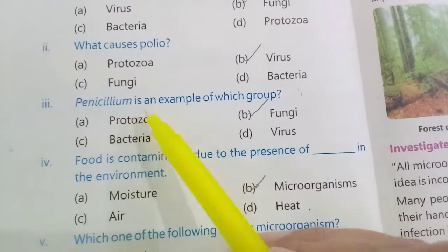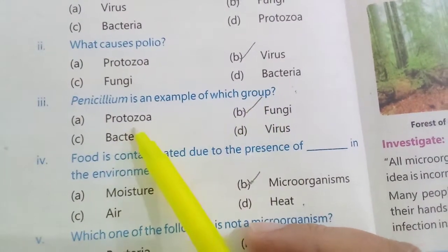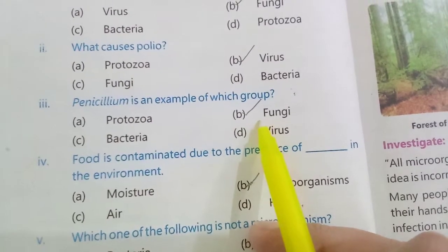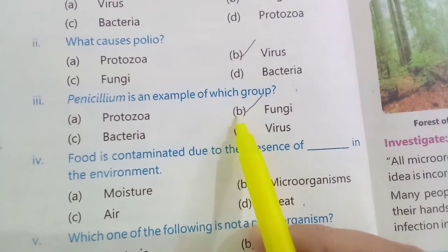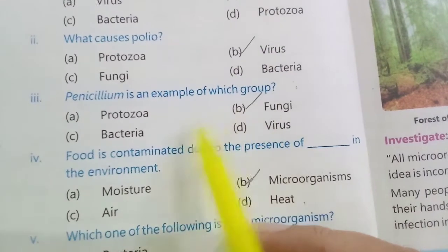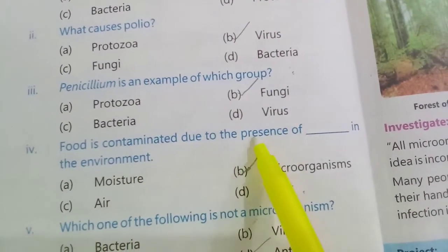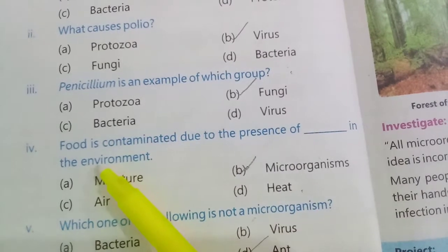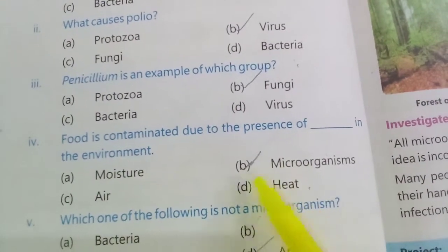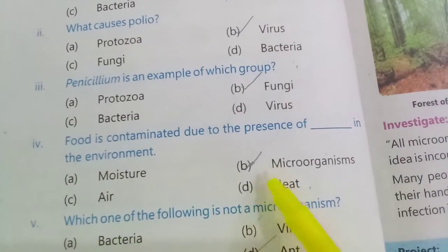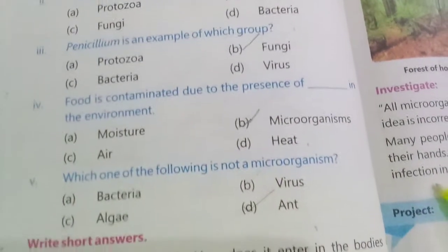Penicillium is an example of which group — protozoa, fungi, bacteria, virus? The answer is fungi. Food is contaminated due to the presence of dash in the environment — moisture, microorganisms, air, heat? The answer is microorganisms.